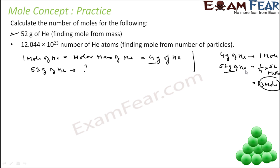So 52 grams of helium is nothing but 13 moles, and 13 moles is 13 into 6.023 into 10 to the power 23 atoms, because we are talking about helium atoms.